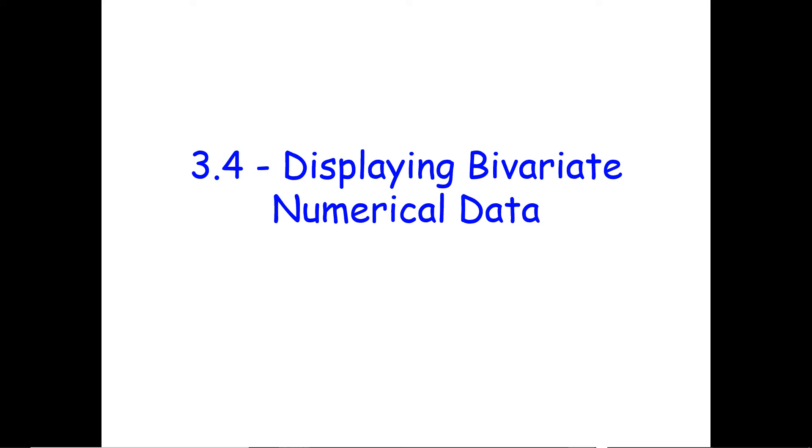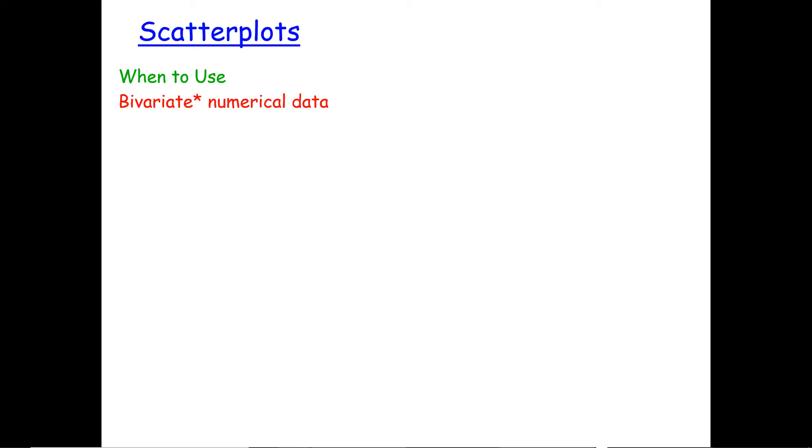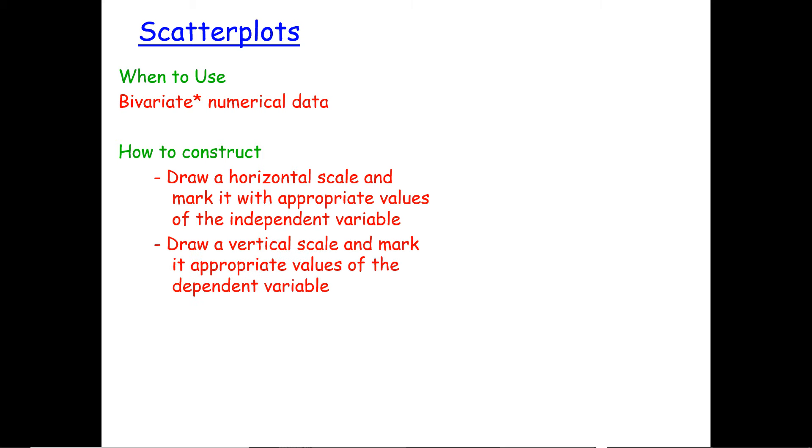The most important graph based on bivariate numerical data is a scatter plot. We use a scatter plot when we have bivariate numerical data. To construct it, we draw a horizontal scale and mark it with appropriate values of the independent variable.